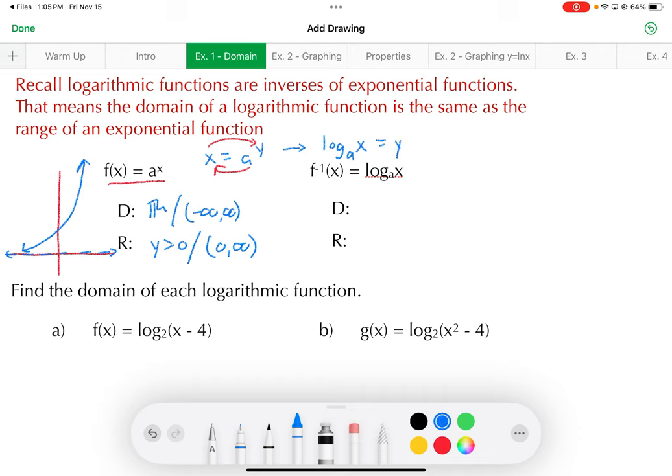So that just verifies that the inverse function listed below there is in fact the inverse of f of x there. So that means we can just switch these two. The domain of the logarithmic, then, would be x is greater than 0. And the range would be all real numbers. So with that in mind, what that's telling me is you can only evaluate a logarithm with a non-negative value, something that's larger than 0.